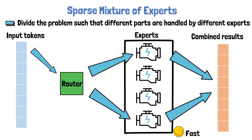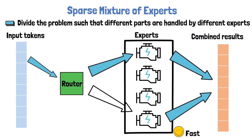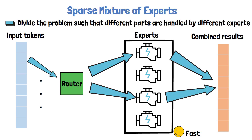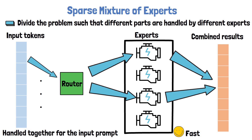The flow is repeated for each input token, so the second token also passes via the Router, and the Router can choose different experts to activate. For the input prompt, the tokens are handled together and not one after the other as shown in this example. However, for the generated tokens in the response, we have to go through this process token by token. This is an important distinction for the method we will explain in a minute.